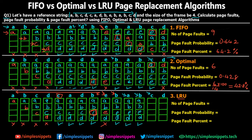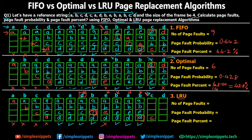Now C is requested but C is not in memory, so we apply LRU again. Looking back in the timeline: B was just accessed, so we can't replace B. Before that, A was accessed — not A. Before that, B was accessed but it was already ruled out as recently used. Checking E: B, A, and E have been recently accessed. D is the least recently used compared to E, B, and A. So we replace D with C. Frames: A, B, E, C — page fault.